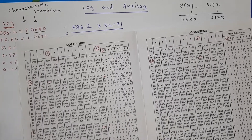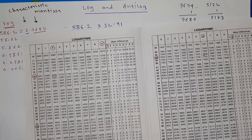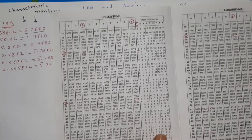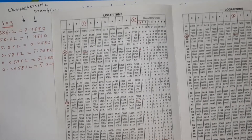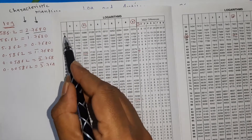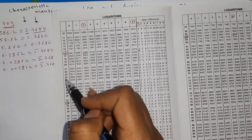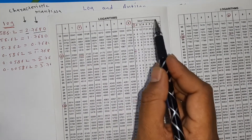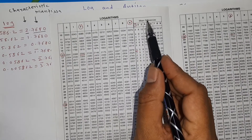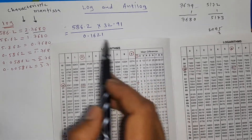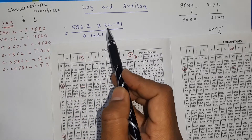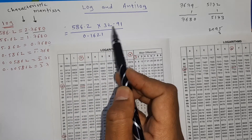Log and anti-log: how to read the log table and do calculations. In the log table, you can see the log up to four digits. The first two digits you will see in this column, the third digit in this column, and the fourth digit in the mean difference column. See with respect to our example: 586.2 multiplied by 32.91 divided by 0.1621.